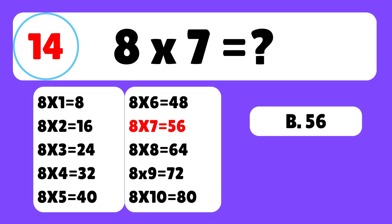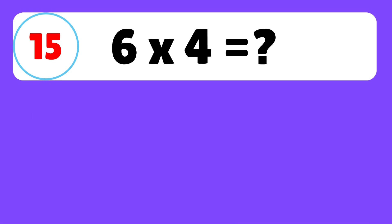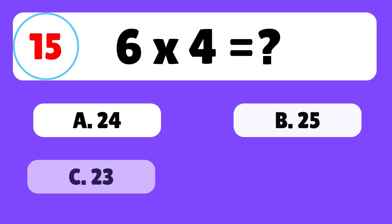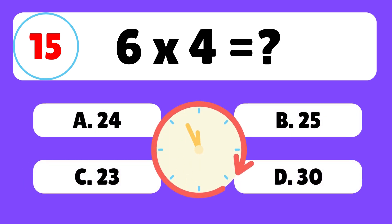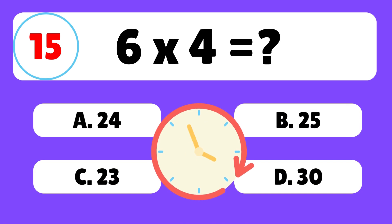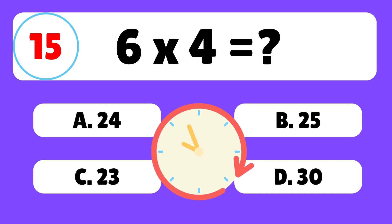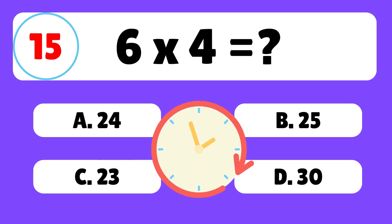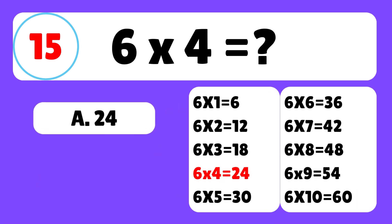Question 15. What is 6 times 4? The answer is A. 6 times 4 is equal to 24.